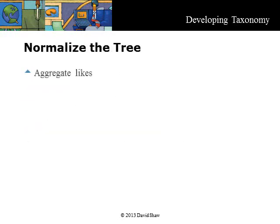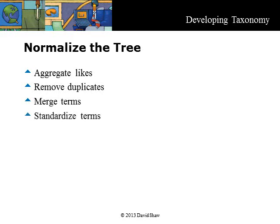Normalize the tree in your taxonomy by aggregating like terms. Remove duplicates and merge terms. Standardize terms and flatten the tree. When you flatten it, it should be no more than 10-12 siblings wide and 3-4 levels deep, although scientific and engineering taxonomies are likely to be much larger. What they gain in coverage, they sacrifice in effectiveness and efficiency. Large models are less effective for many end users because they must have a deeper knowledge of the terminology in the domain, and the taxonomy is harder to learn and remember.